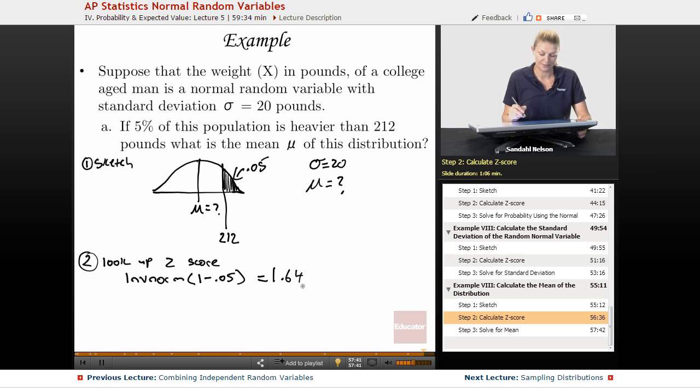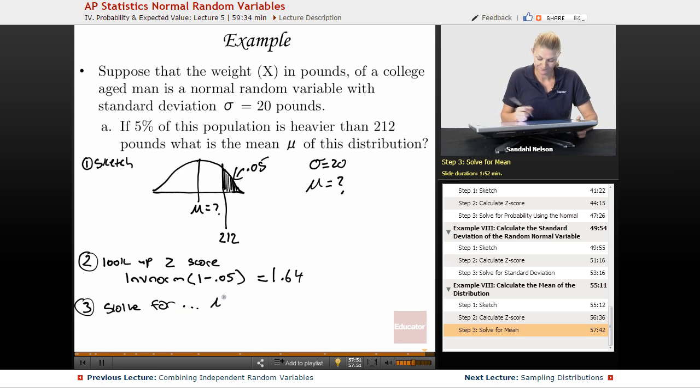Okay, so our z-score is 1.64, and then our last step is to solve for whatever we need to solve for. In this case, we're going to solve for μ. Okay, so we know that z equals (x - μ) / σ.